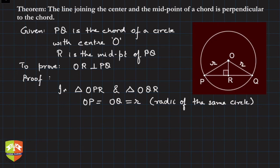Then what next? OR is equal to OR, common side. This is a common side to both the given triangles. What else? Since R is the midpoint, so can I say PR is equal to QR, since R is the midpoint of PQ.